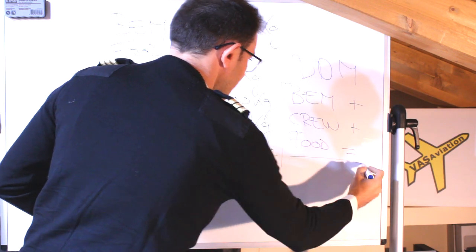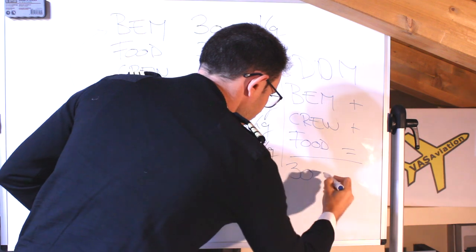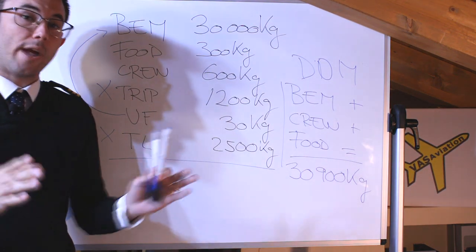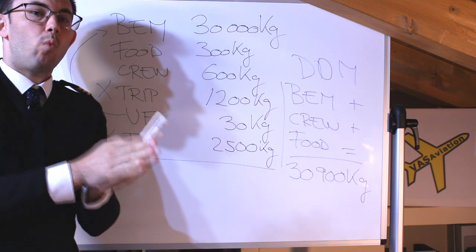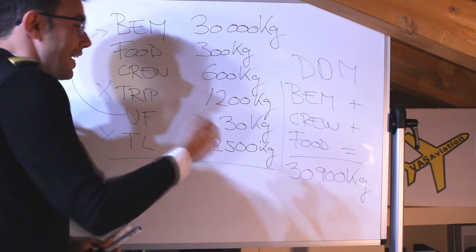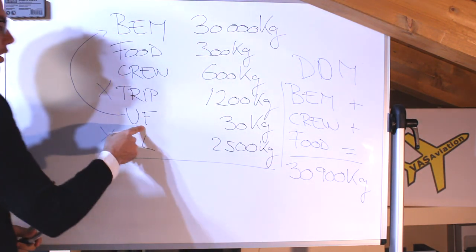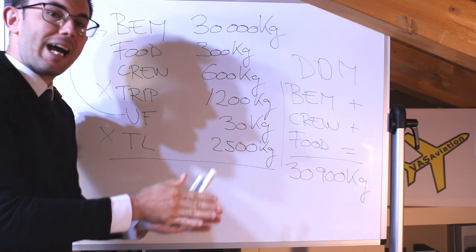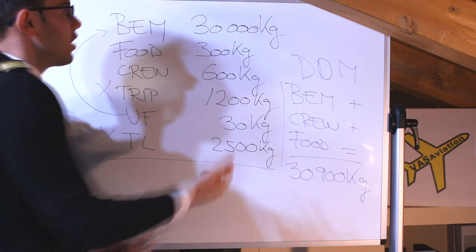The dry operating mass is 30,900 kilos. Always remember with exercises: know what they're asking for, what they give you, and what you need. Be careful not to fall into the trap of adding the 30 kilos of unusable fuel — it is already included in the basic empty mass as the unremovable fuel in the pipes of the aircraft.